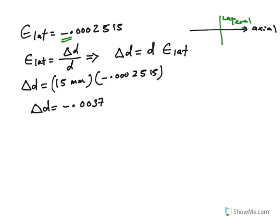How much? About this much. So the final length of the diameter would be the initial length plus delta D. But delta D is negative. It would be 15 minus 0.00377, whatever that comes out to be. That's the final length of the diameter in millimeters.